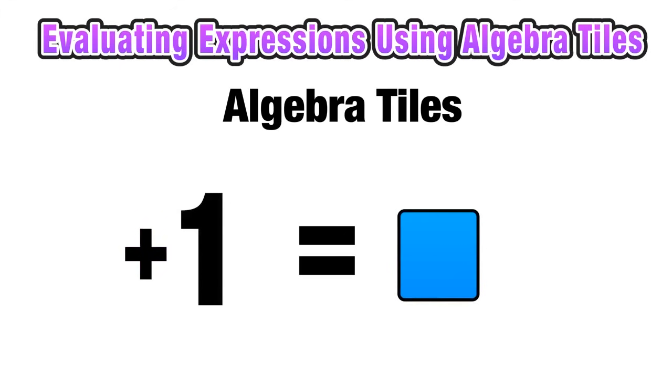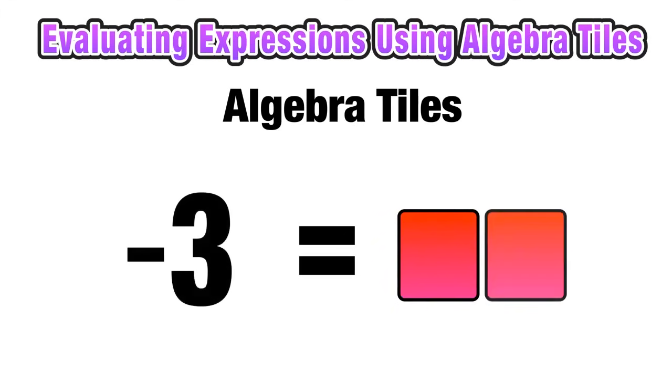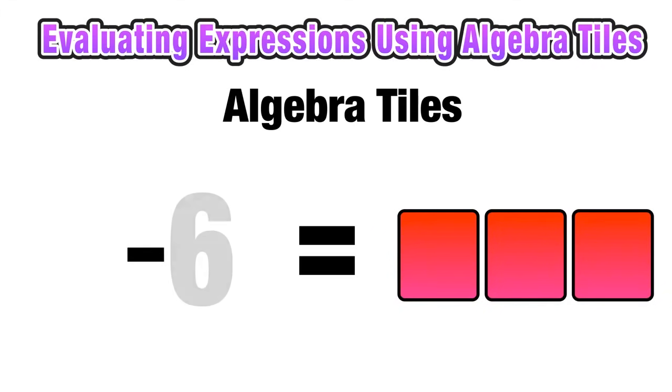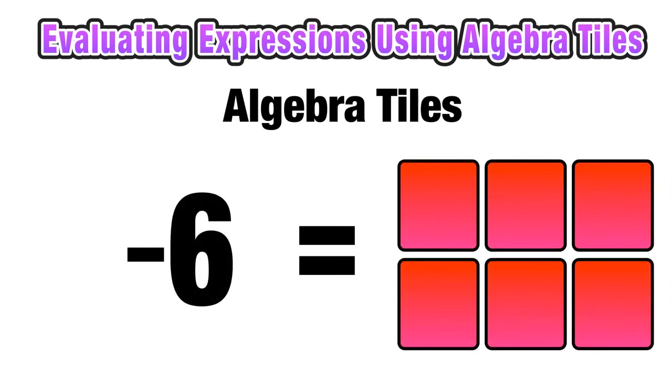However, if the sign was negative, so if we wanted to represent negative 1, we would have to use a red square. So to represent negative 3, we would use 3 red squares. If we wanted to represent negative 6, we would use 6 red squares.